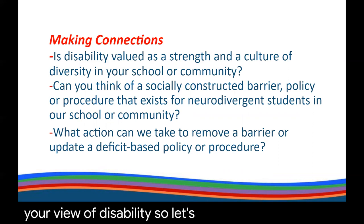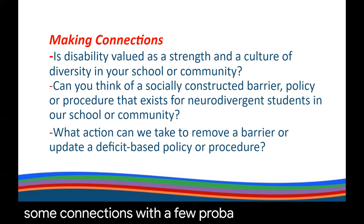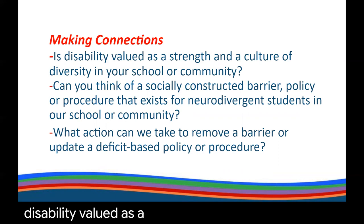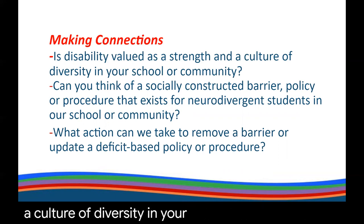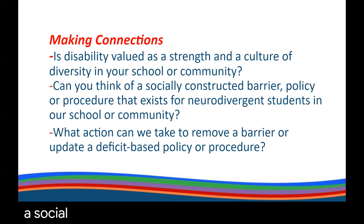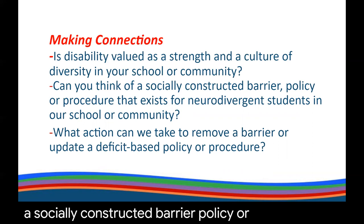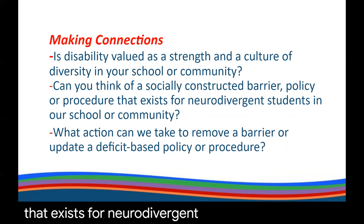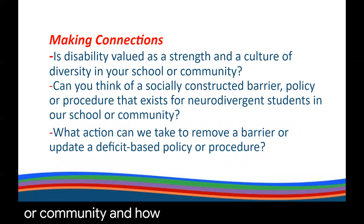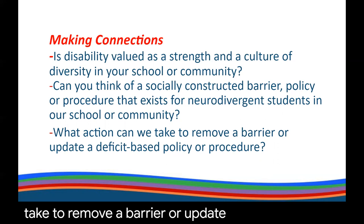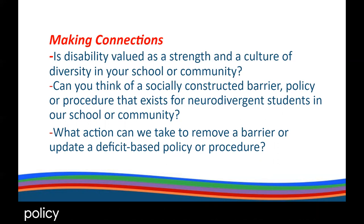Let's conclude by making some connections with a few probing questions. Is disability valued as a strength? Is disability valued as a culture of diversity in your school or community? Can you think of a socially constructed barrier, policy, or procedure that exists for neurodivergent students in your school or community? And what action can we take to remove a barrier or update a deficit-based policy or procedure?